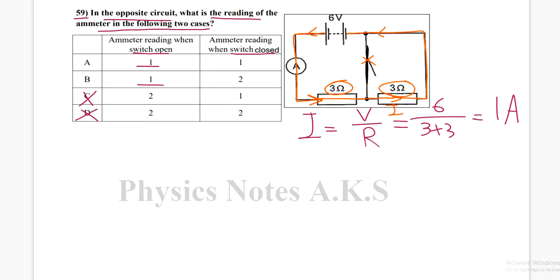Like this one doesn't exist. So basically I will have the same connection: 3Ω and 3Ω are in series. I'm going to do the same steps, and I will get again the current is 1 ampere when the switch is closed. So the correct answer is A.